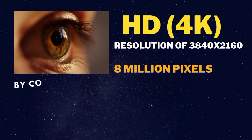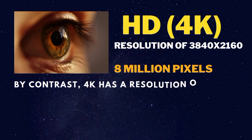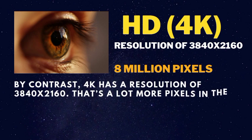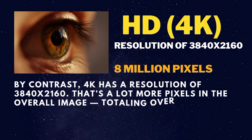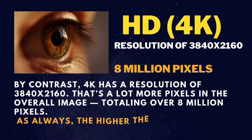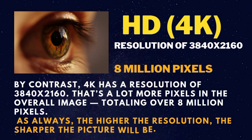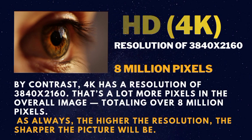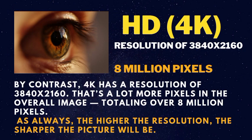Now, in OnPassive OConnect HD 4K, this resolution is 3840 by 2160. If we multiply that, we will get 8 million pixels. So it is 4 times than HD — clarity will be more. By contrast, 4K has a resolution of 3840 by 2160. That's a lot more pixels in the overall image, totaling over 8 million pixels.